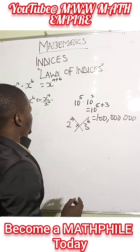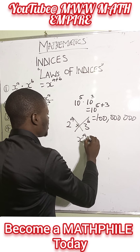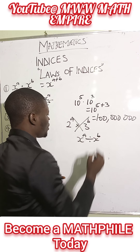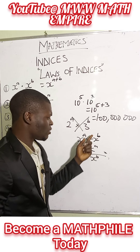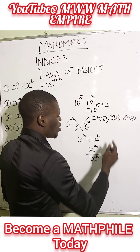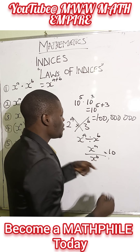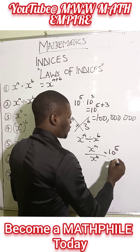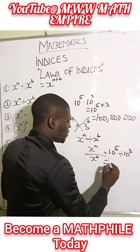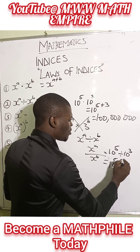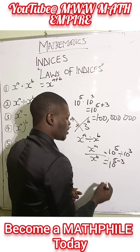We have the second one, the division law, which reads: x raised to the power of a divided by x raised to the power of b. This can also be written as a fraction — both mean the same thing. Using a non-variable: 10 raised to the power of 5 divided by 10 raised to the power of 3 equals 10 raised to the power of 5 minus 3, which is 10 raised to the power of 2, which is 100. 10 times 10 is 100.